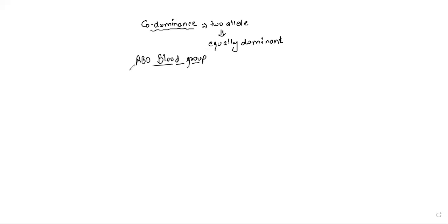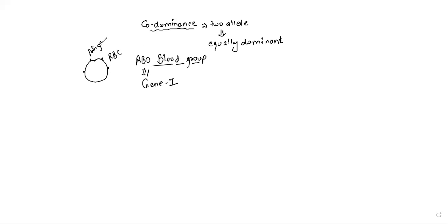Almost 80% of the population has the ABO blood group system. The gene responsible for this ABO blood group system is gene I. There is one single gene controlling this ABO blood group system. This gene is responsible for specific sugars present on RBCs — specific sugars are synthesized by gene I. In nomenclature, these are called antigens present on RBCs, but actually they are molecules synthesized by gene I.